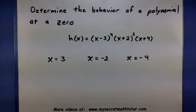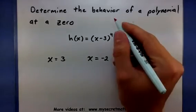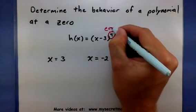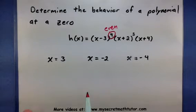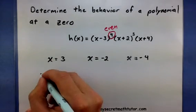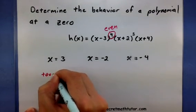Now let's look at their powers. The power on this first zero is even, which means at the zero x equals 3, it's just going to touch.